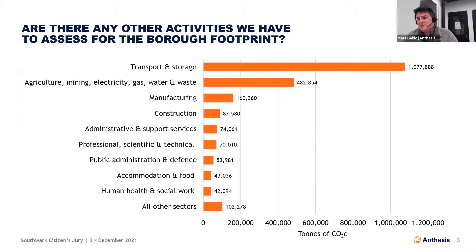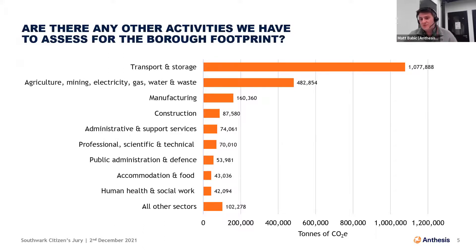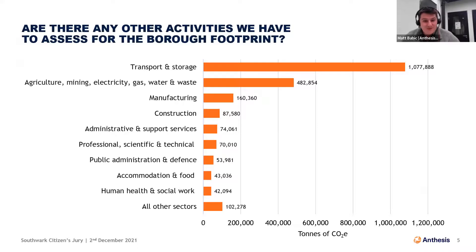The other thing to note is that at the bottom there's a label for 'all other sectors,' which is a list 15 long of different industries. This is really representative of the fact that Southwark's economy is very diverse — spend is made across many different areas, a lot of it very small. As a result, we have this big-hitter top-10 list, but then much smaller contributions from lots of smaller sectors. That covers all of the sectors, and this is my final slide.